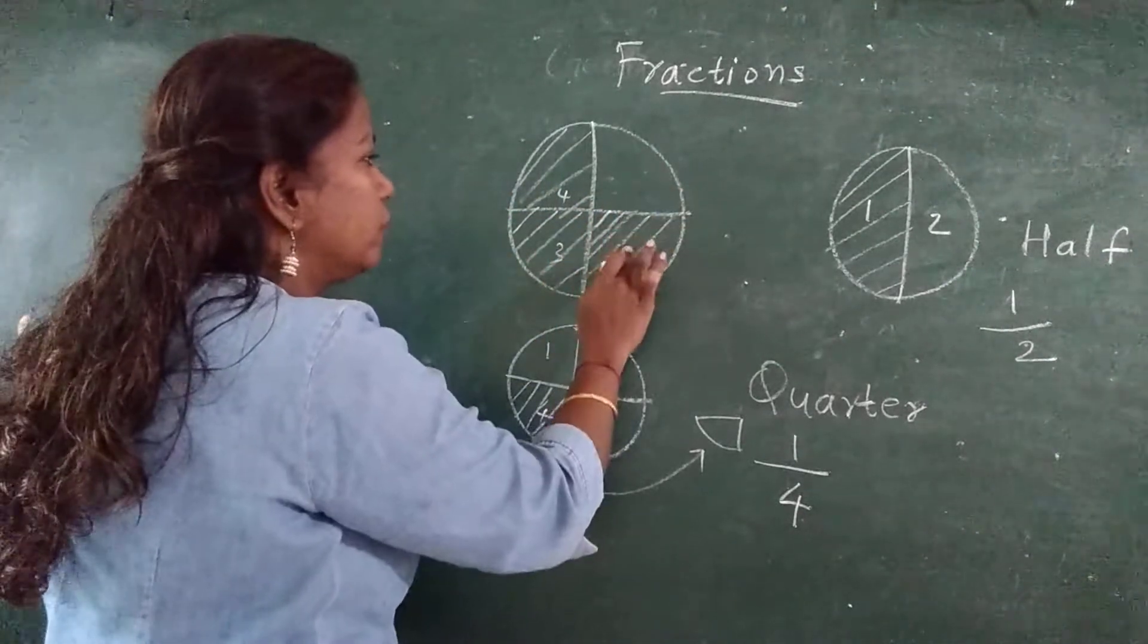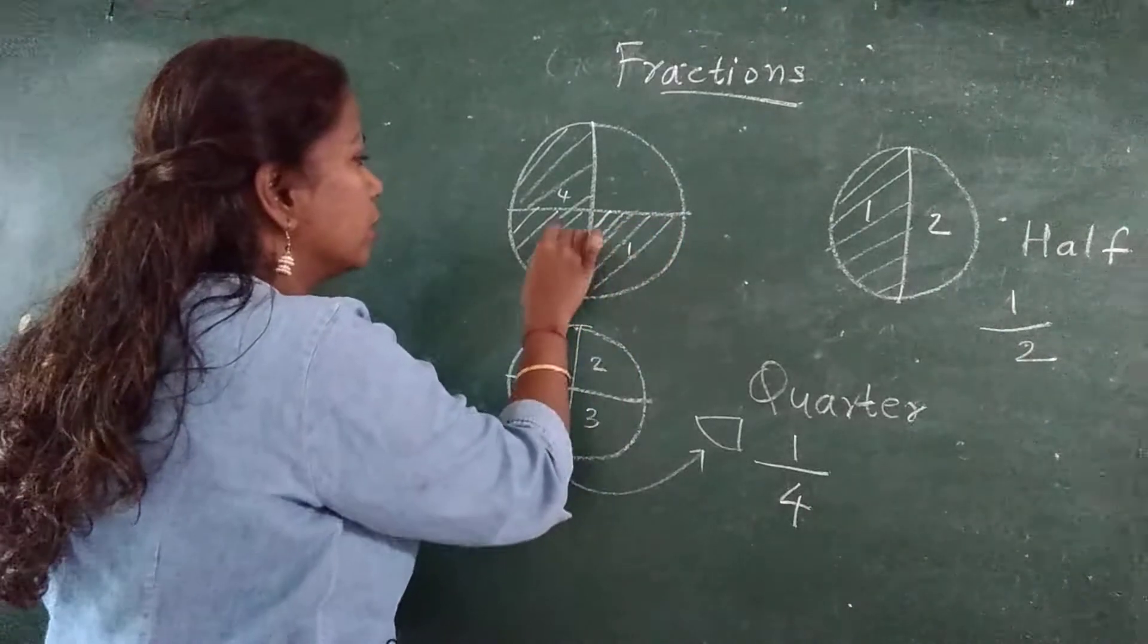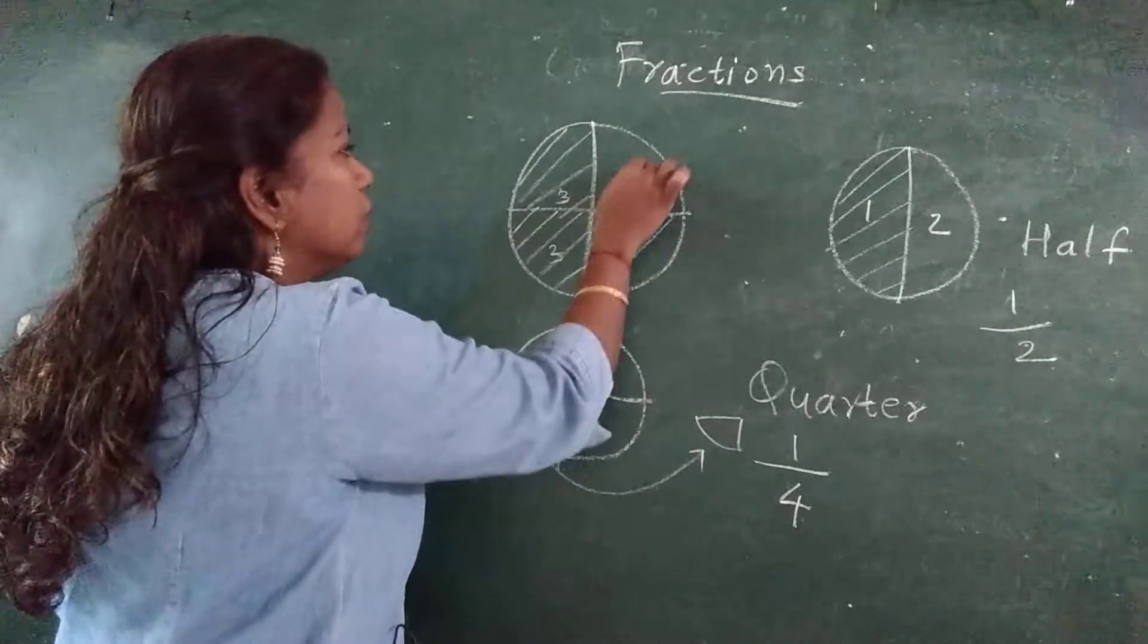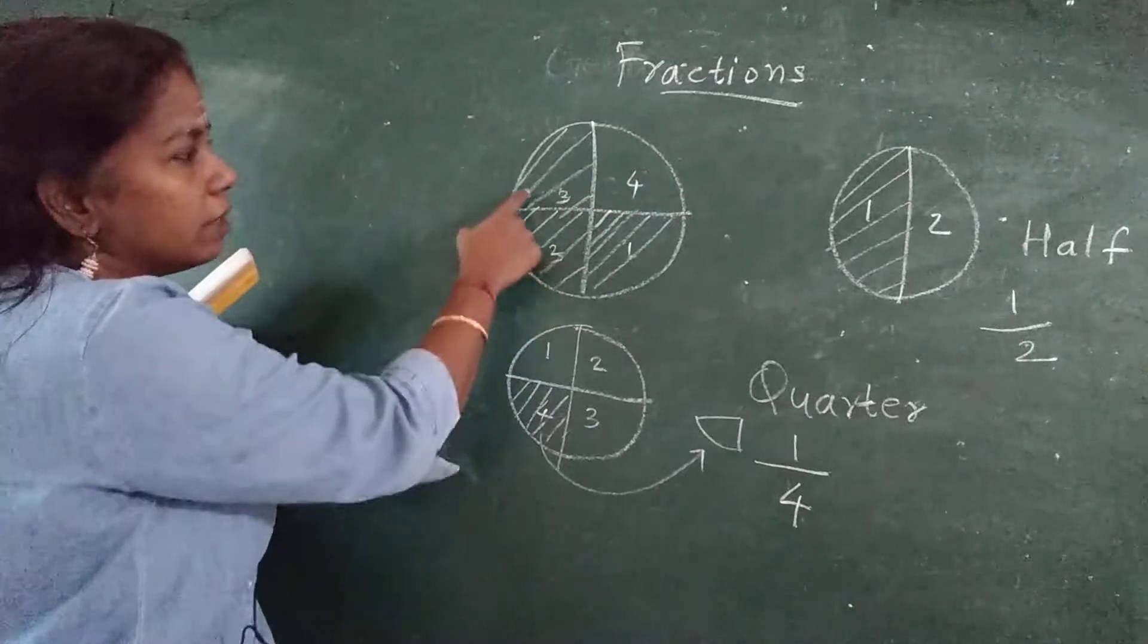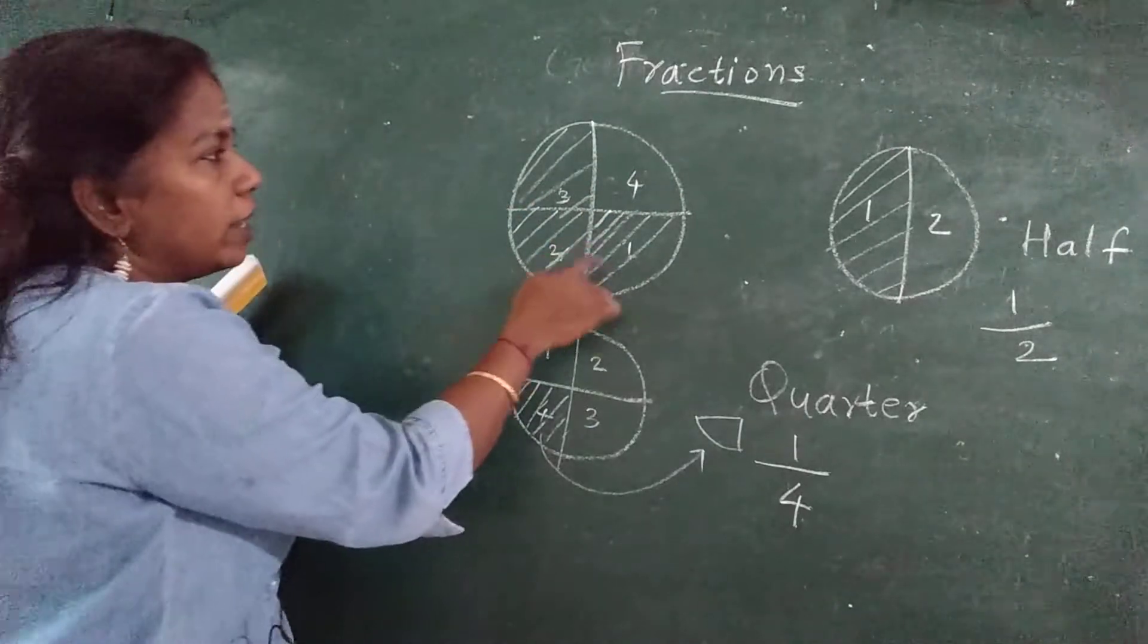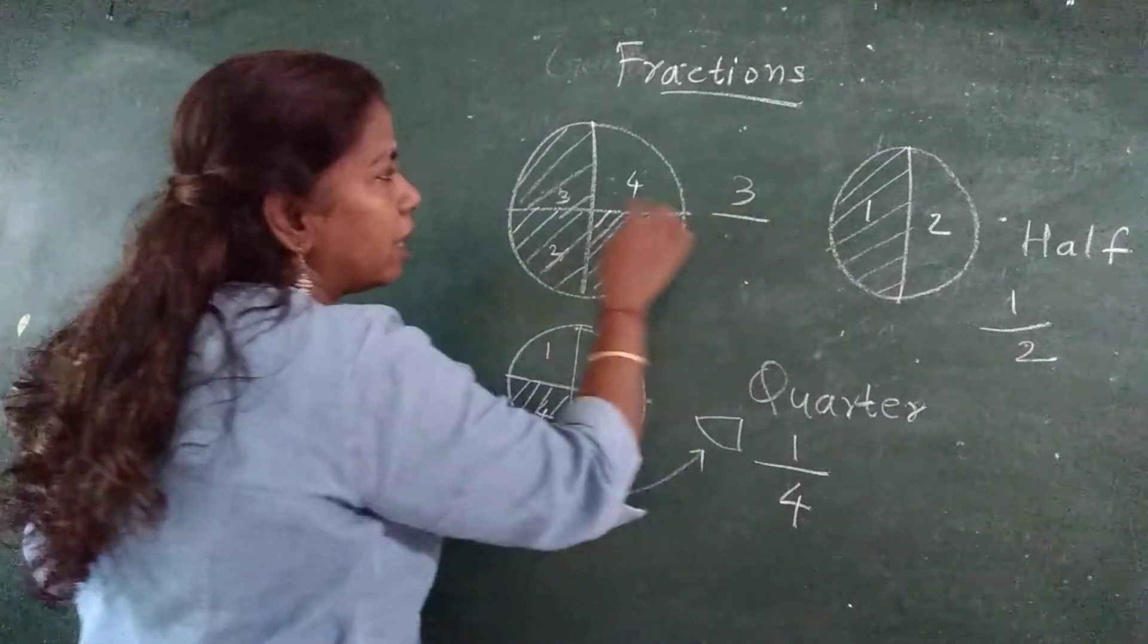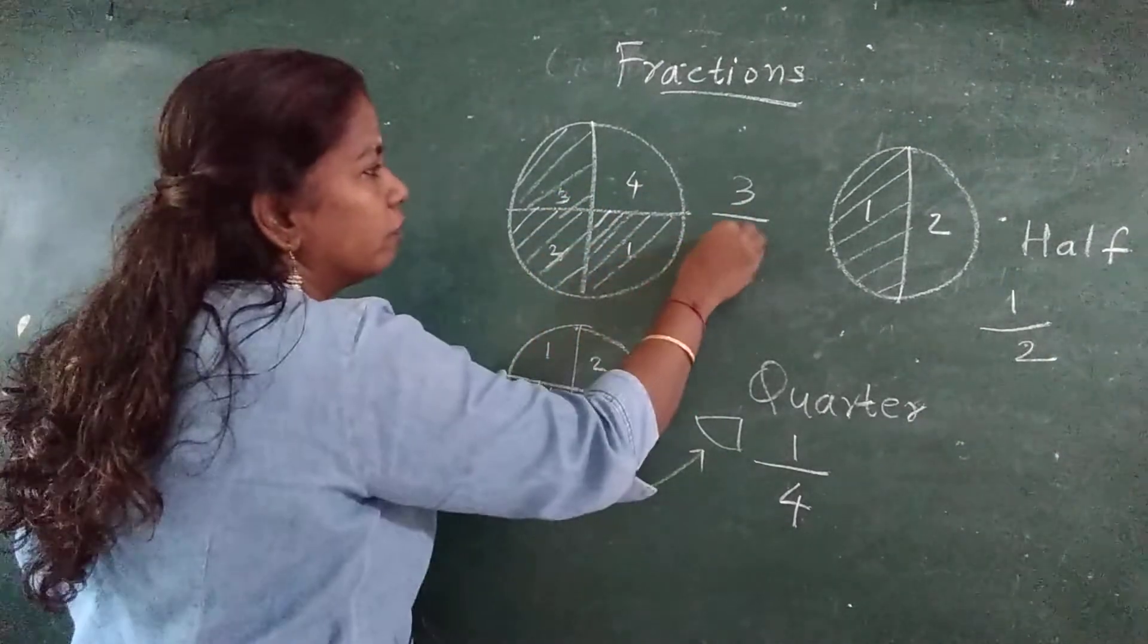You may get confused, so what I will do? I will write here one, two, three, four. How many parts I have shaded? One, two, three, four. How many parts I have made it? Four.